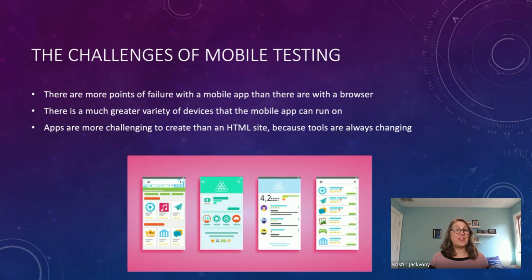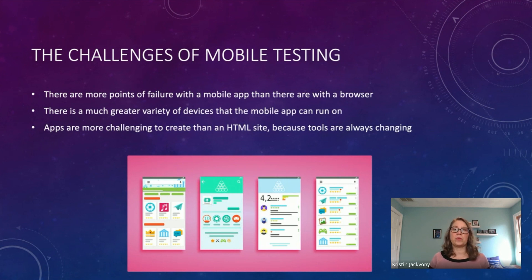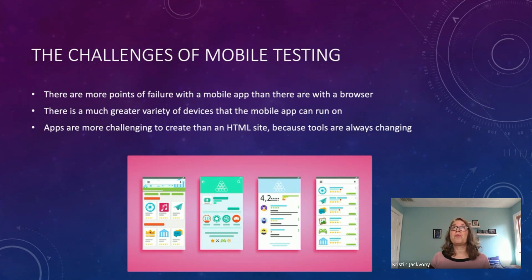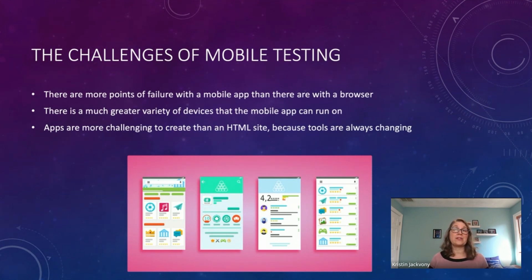Apps are more challenging to create than an HTML website because the tools are always changing. I took a course in Android development with Kotlin and then discovered a year later there was Jetpack Compose built on top of Kotlin. So if you know the challenges of mobile manual testing, you won't be surprised that mobile automated testing is even more challenging than web automation. Today I'm going to give you six steps for coming up with a comprehensive mobile automation strategy.